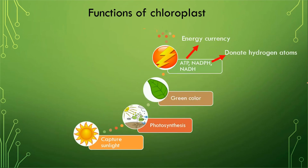The fourth function is that chloroplast generates ATP, which is an energy currency, and this is very important for plants to perform their activities. Along with this, the chloroplast is also the site for the generation of NADPH and NADH. They both contain hydrogen atoms, so they donate hydrogen atoms to the other cycles which are going on inside a plant cell.